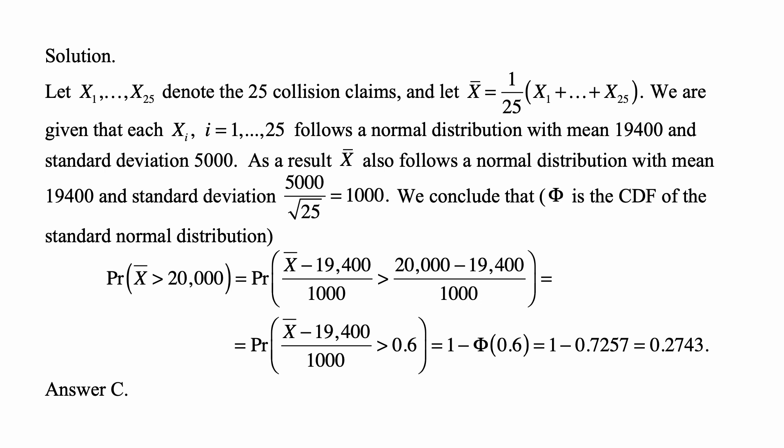The reason is because the sum x₁ through x₂₅ has a variance equal to the sum of the variances, so that would be 25 times 5,000 squared. However, the variance of x-bar would be 1 over 25 squared times that variance. So 25 and 25 squared would cancel out, leaving only 25.